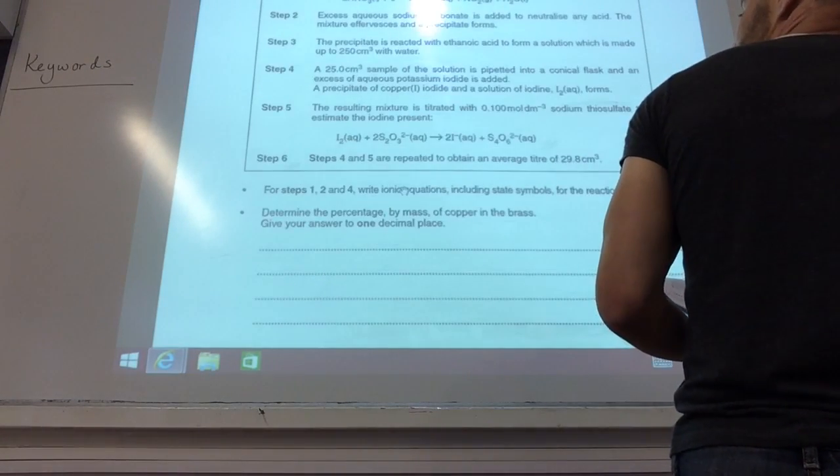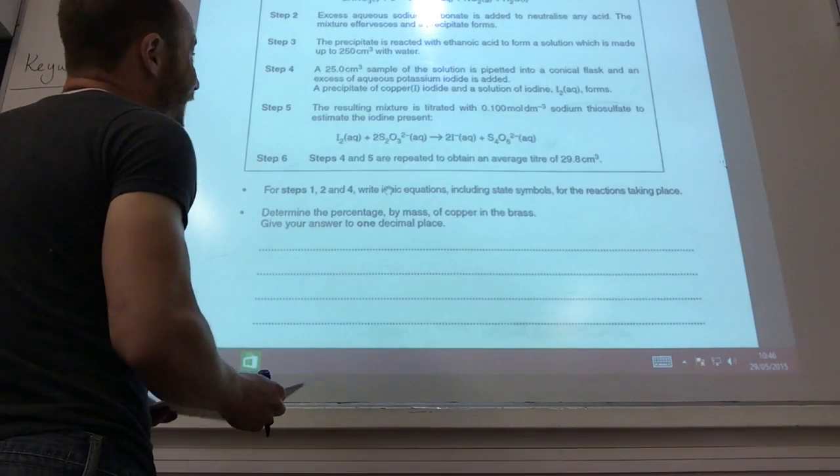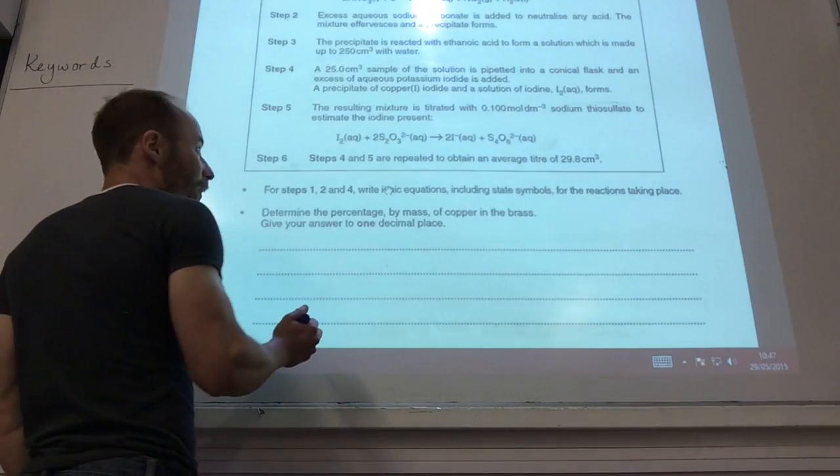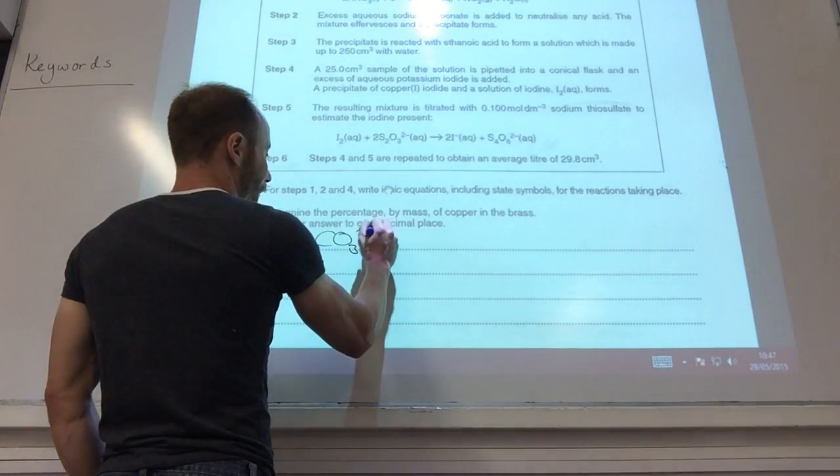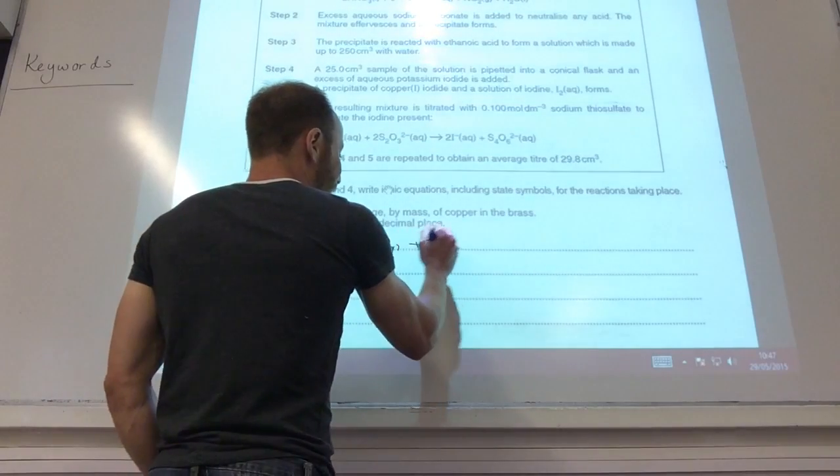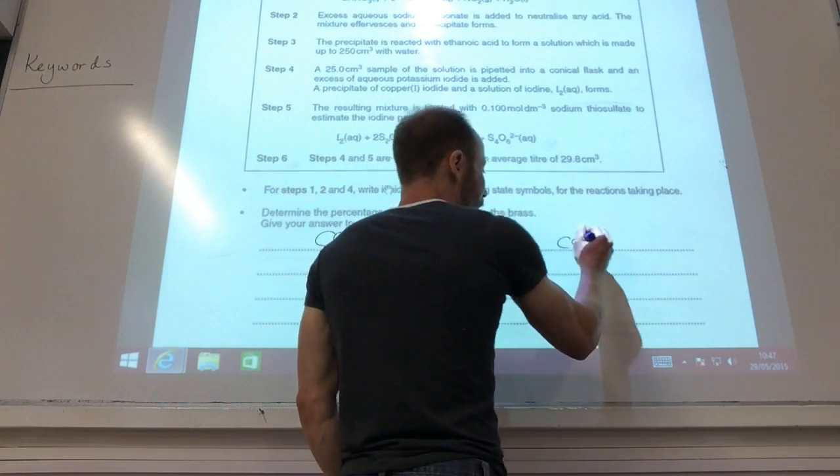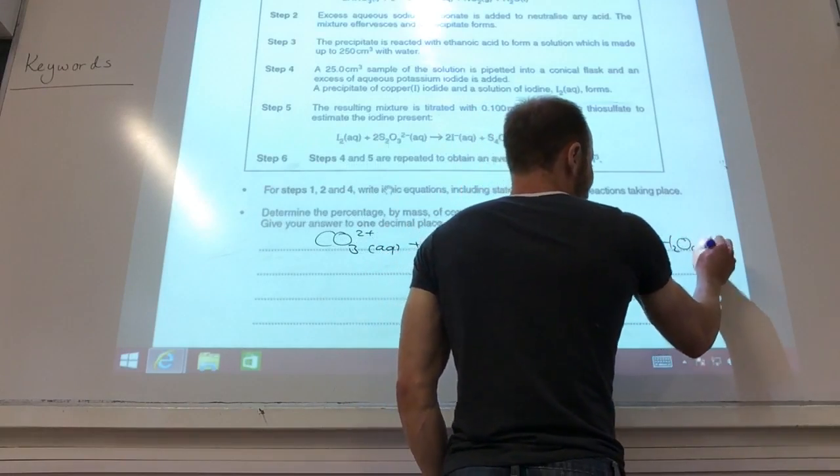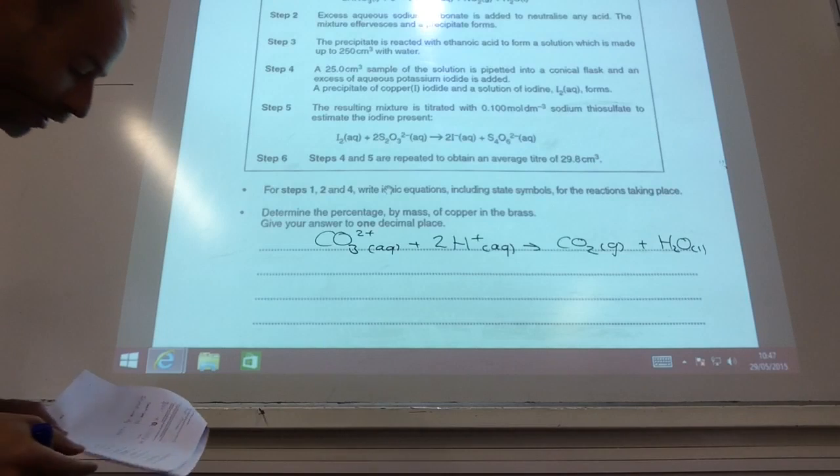Let's keep step two up there. Excess sodium carbonate is added to neutralize any acid. So, that one's not too bad. That's just going to be a carbonate reacting with acid to give you carbon dioxide gas, which is why it fizzes, and water. So that's one of the equations that really is good for you to know.